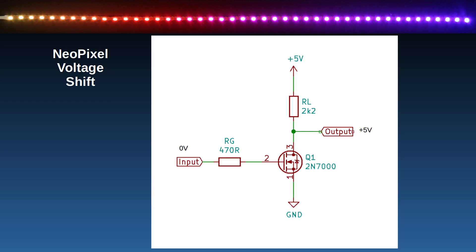When we set the input to 0 volts, then the MOSFET is switched off. This means there is no current flowing through the transistor, and the output is determined by the resistor RL. The resistor is connected to the 5 volt supply, so the output will be at 5 volts. This is assuming that the output connects to another circuit with a high impedance.